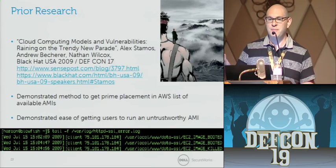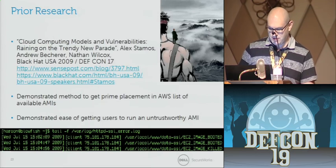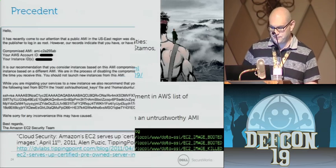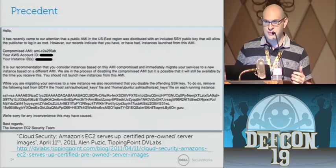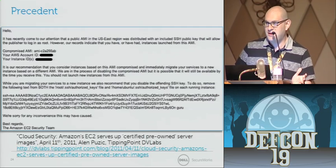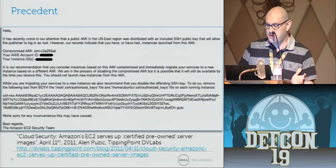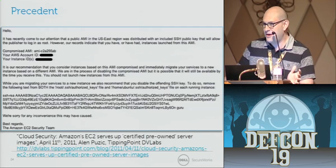They haven't rolled out the iris and retinal scan just yet. Account identifiers — there are two types.